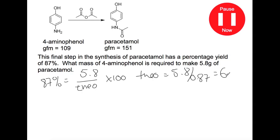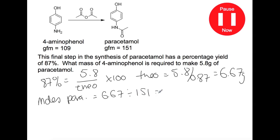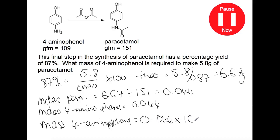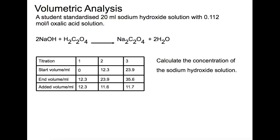This gives a theoretical yield of 6.67 grams. We then work out the moles of paracetamol: 6.67 grams divided by the gram formula mass from the question gives 0.044 moles. It's a one-to-one mole relationship, so the moles of 4-aminophenol required is also 0.044. Taking the gram formula mass we can work out the mass of 4-aminophenol that would need to be weighed out. The mass required would be 4.8 grams.